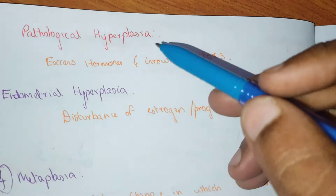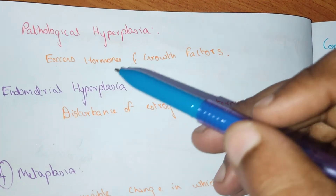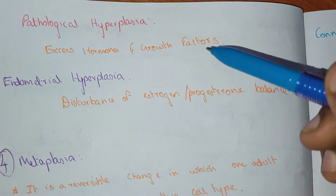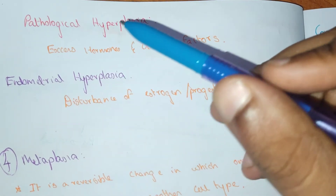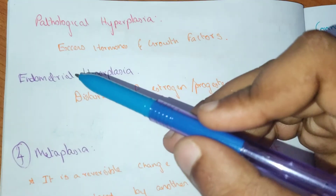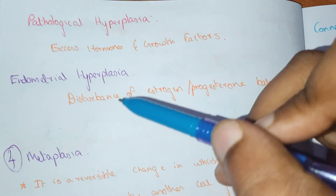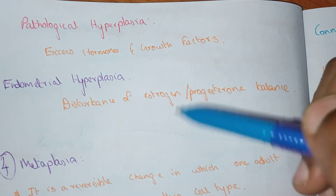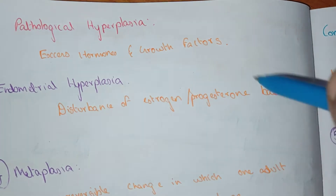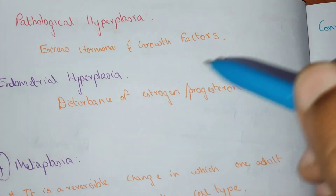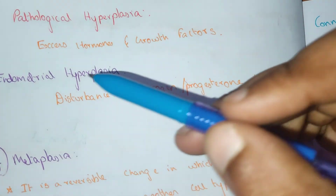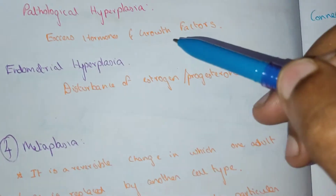Pathological hyperplasia is caused by excess hormones and growth factors. For example, endometrial hyperplasia is due to disturbances in estrogen and progesterone balance.